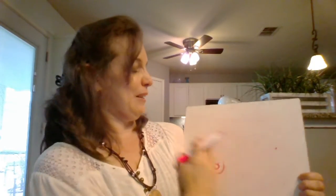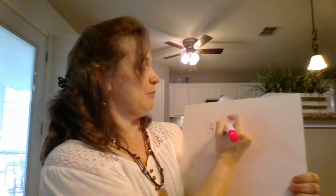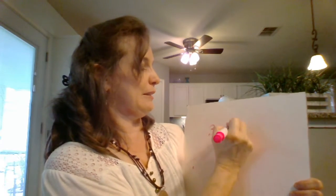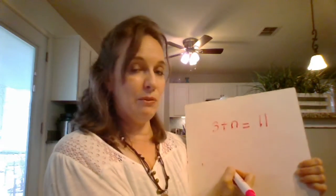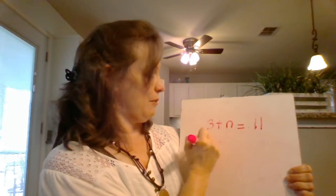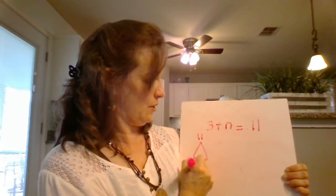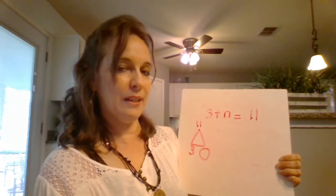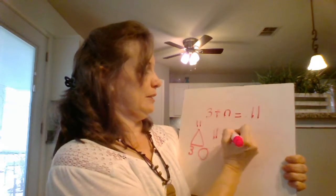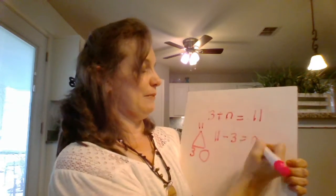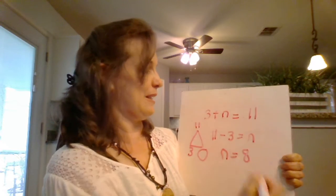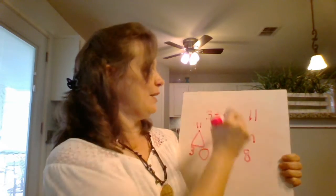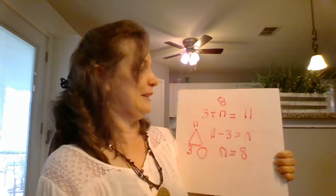Let's look at the next one. You need to write this down, so pause your video and write it down. 3 plus n equals 11. I want you to set it up this way — you've got part, part, whole. You do not have to draw the triangle, but it's part, part, whole. So how do we figure that out? We subtract: 11 minus 3 equals n. What is 11 minus 3? 8. So n is equal to 8. If you put an 8 where the n is, it will work. 3 plus 8 equals 11.